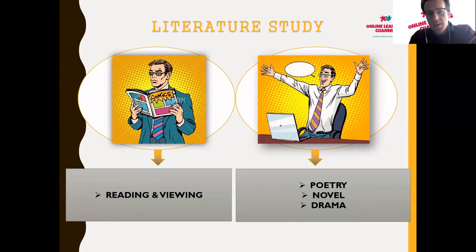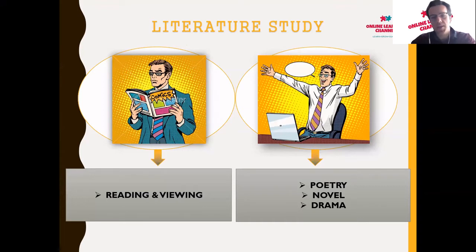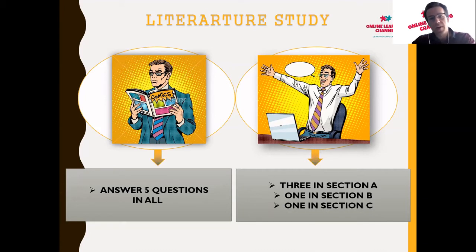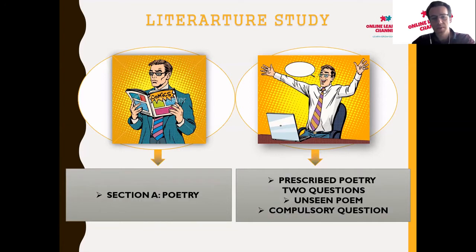When it comes to literature, this refers to the aspect of English known as reading and viewing. Literature can be taken in the form of poetry, novels, or dramatic items, typically of a Shakespearean theme. In the English home language Paper 2, the paper is divided into: Section A — poetry, Section B — the novel, and Section C — the dramatic item. You need to answer five questions in all.